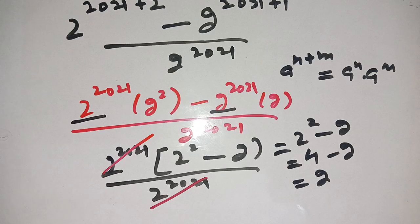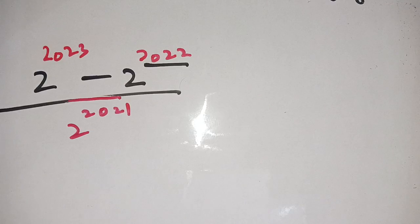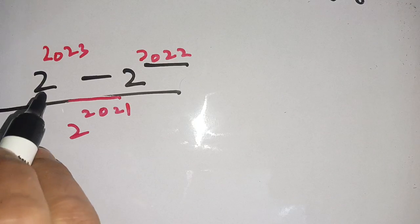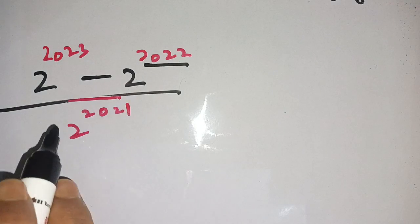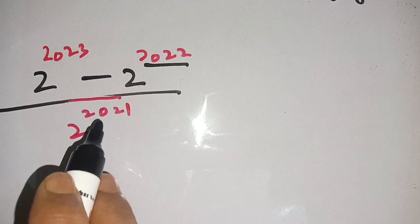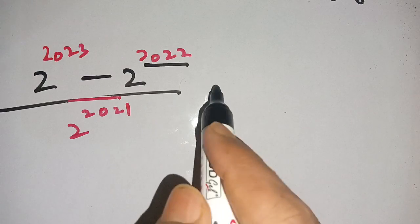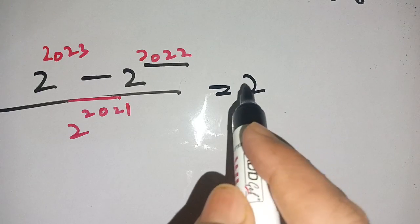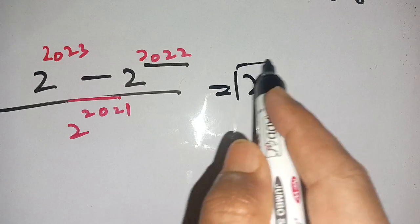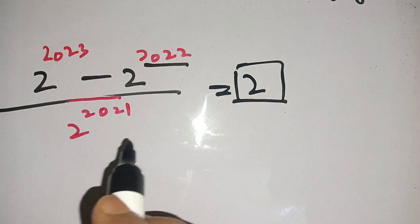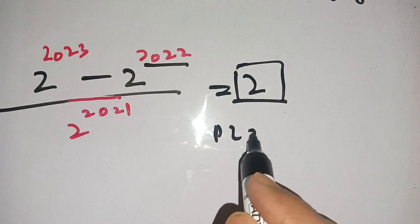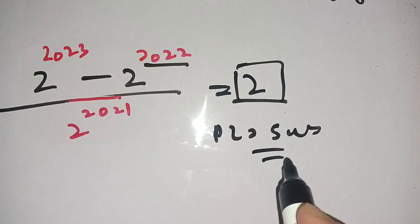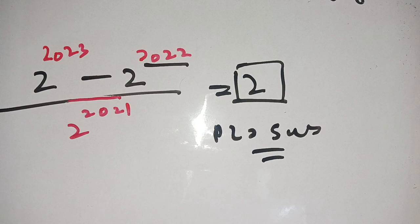Thus our solution is: 2 power 2023 minus 2 power 2022, divided by 2 power 2021, is equal to 2, which is our required value. If you are new here, make sure to subscribe to our channel for more math videos. See you in the next video!